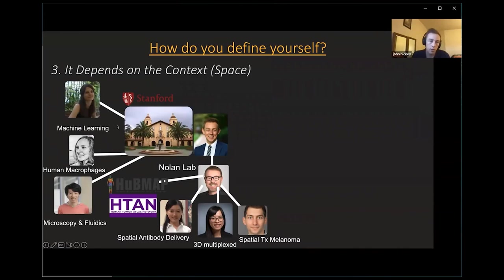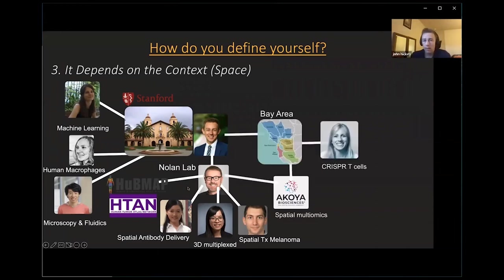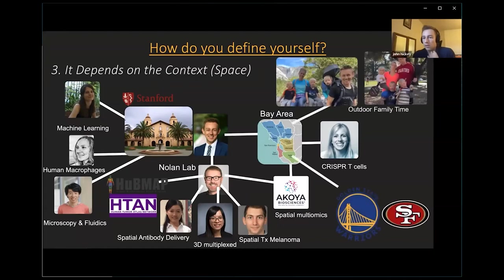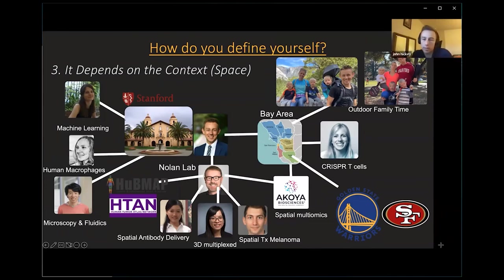Just being at Stanford, there's a host of technology development — I've been able to work with people doing machine learning, microfluidics, and microscopy. Being in the Bay Area, I start to work with companies — there's a large biotech hub here, and people interested in things like T-cells for killing cancer. More broadly, I could define myself as an outdoors person who enjoys time with family, because the weather is always nice and there's lots of outdoor activity.